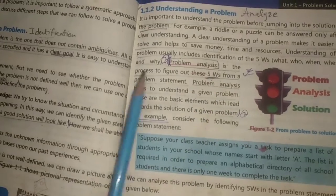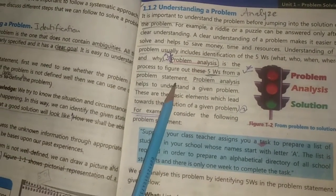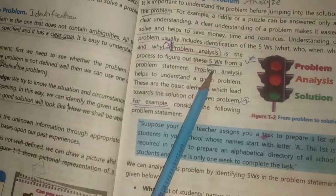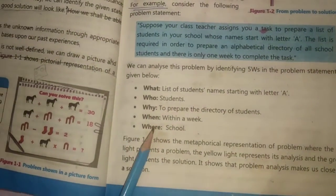The problem analysis is the process to figure out five W's from a problem statement. Five W's are the ones we use, and in the five W's we know what, who, why, when, where.